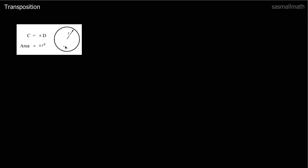We've got these formulas about the circle. The circumference equals pi times diameter, and the area of the circle is pi r squared. These need to be remembered. And sometimes we'll be given the circumference and have to find the diameter.